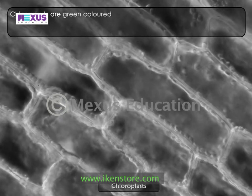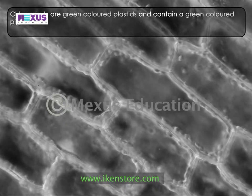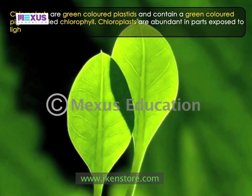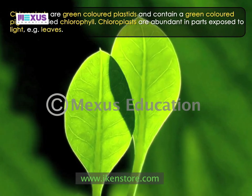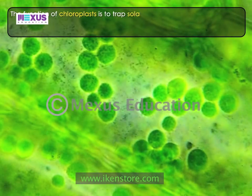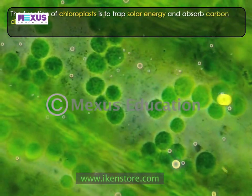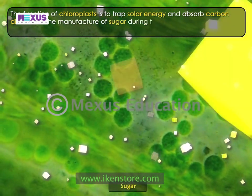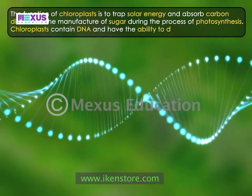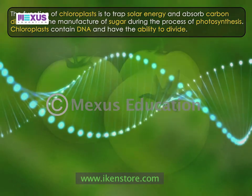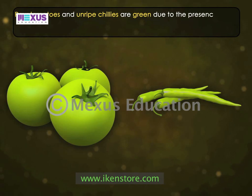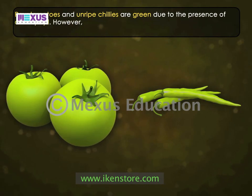Chloroplasts are green colored plastids and contain a green colored pigment called chlorophyll. Chloroplasts are abundant in parts exposed to light, for example, leaves. The function of chloroplasts is to trap solar energy and absorb carbon dioxide for the manufacture of sugar during the process of photosynthesis. Chloroplasts contain DNA and have the ability to divide. Raw tomatoes and unripe chilies are green due to the presence of chlorophyll. However, during ripening, the chlorophyll degenerates and the masked red carotene takes over.